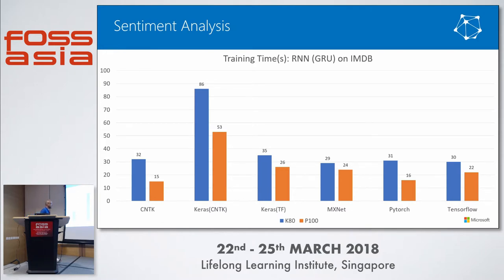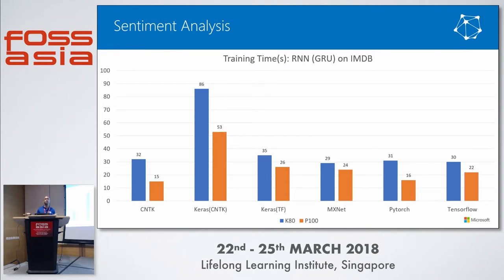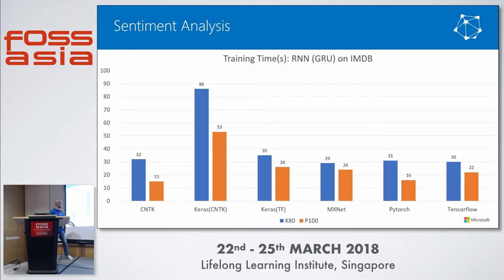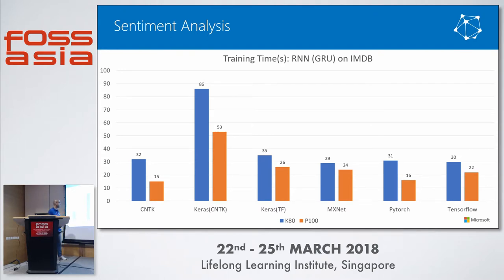People often ask why use CNTK when TensorFlow is so popular. TensorFlow is great — I personally use it — but for certain tasks, certain toolkits may be more optimal, easier to model with, and faster. Notably, CNTK's Keras integration shows worse numbers than TensorFlow's Keras integration, so there's work to be done there — ideally CNTK's Keras numbers should match its native numbers.